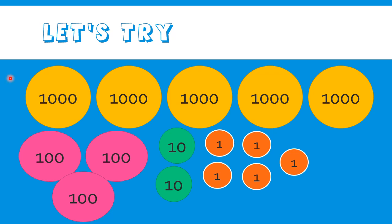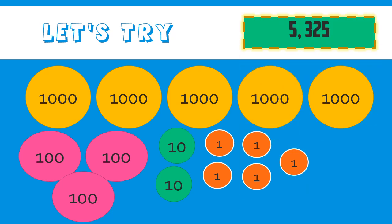Let us try this example. How many thousands do we have? 1, 2, 3, 4, 5 — so that's five thousand. How many hundreds do we have? 1, 2, 3 — that's three hundred. How many tens do we have? 1, 2 — that's twenty. And how many ones do we have? 1, 2, 3, 4, 5 — that's five. If we put all these values together, we will have five thousand three hundred twenty-five.